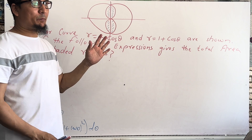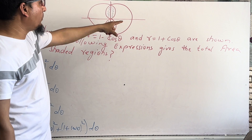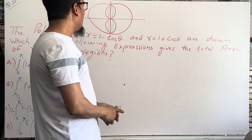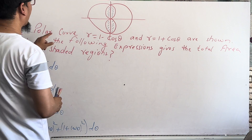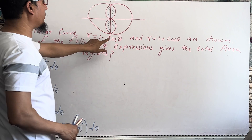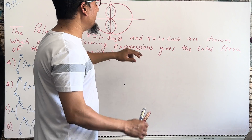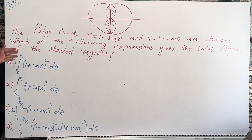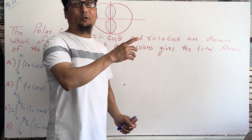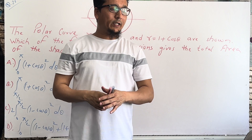It's a polar equation, and here I want to tell you how to find the area of the shaded portion. The polar curves are r = 1 − cosθ and r = 1 + cosθ. These are polar limacon equations. The question asks: which of the following expressions gives the total area of the shaded region?